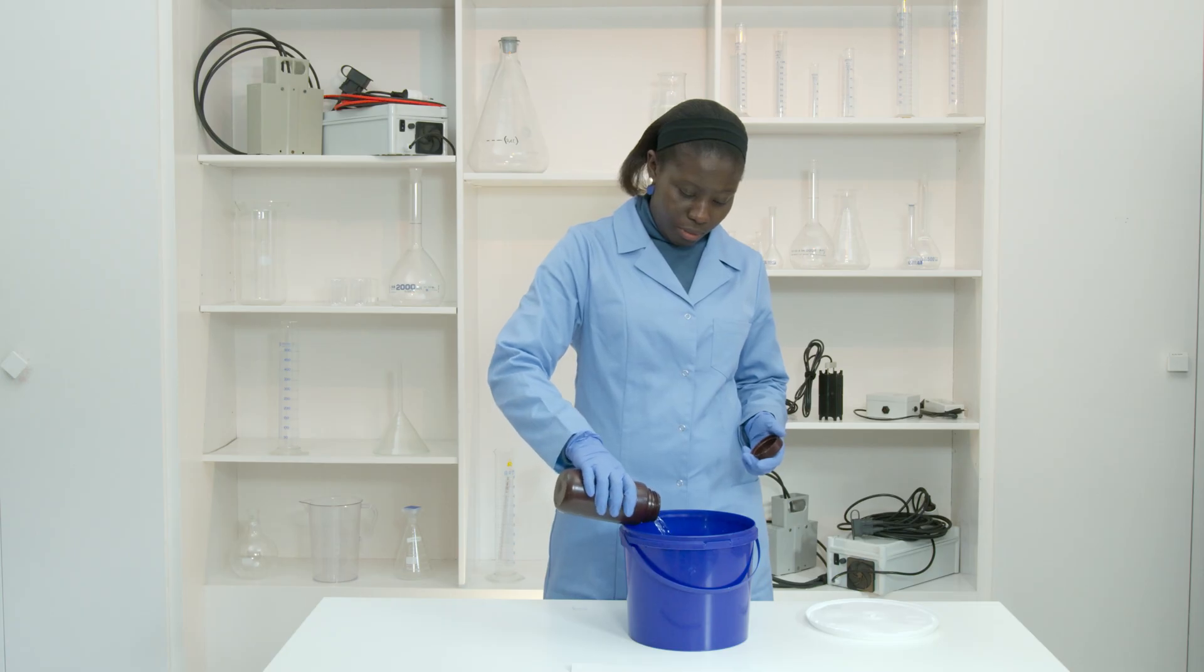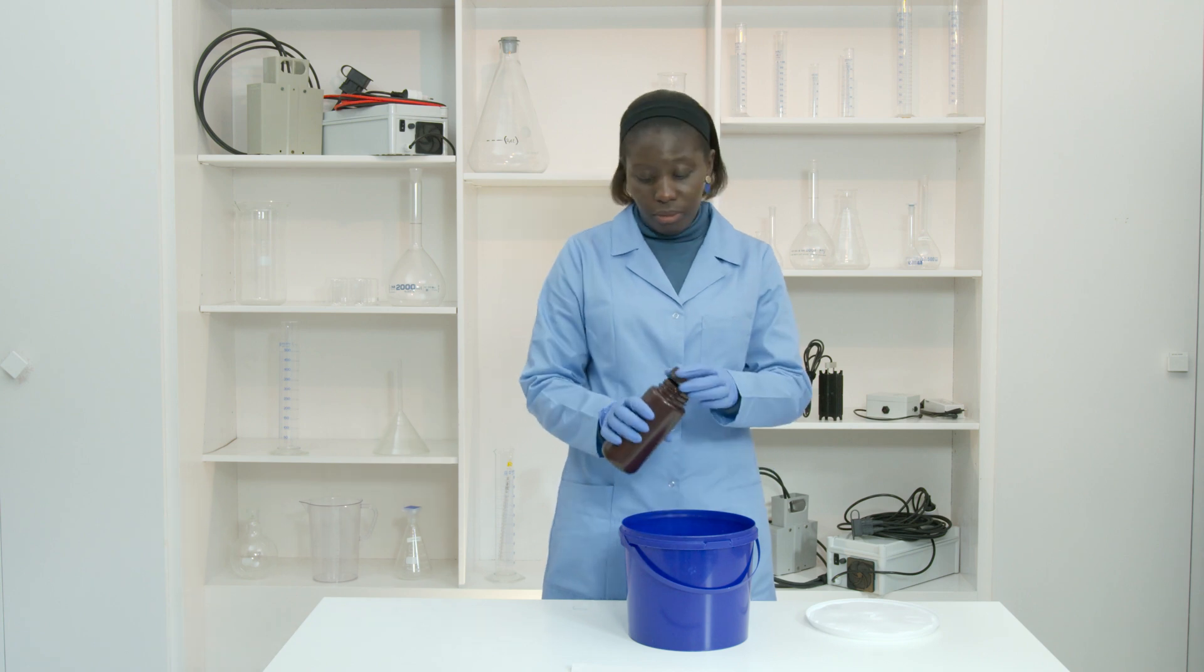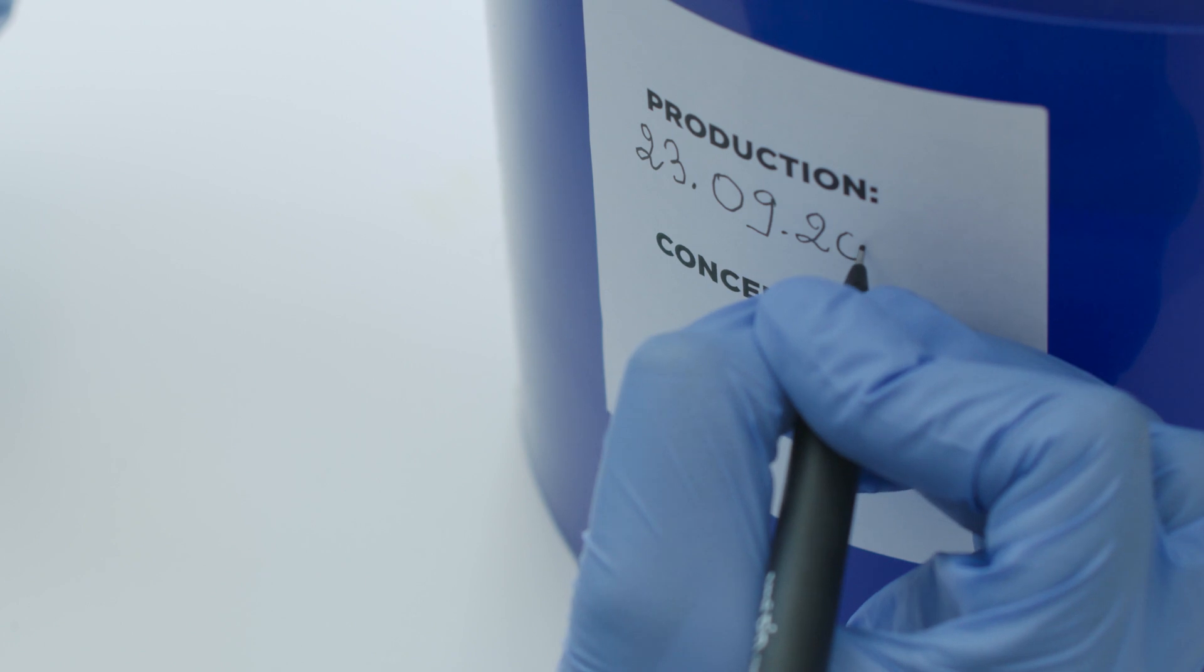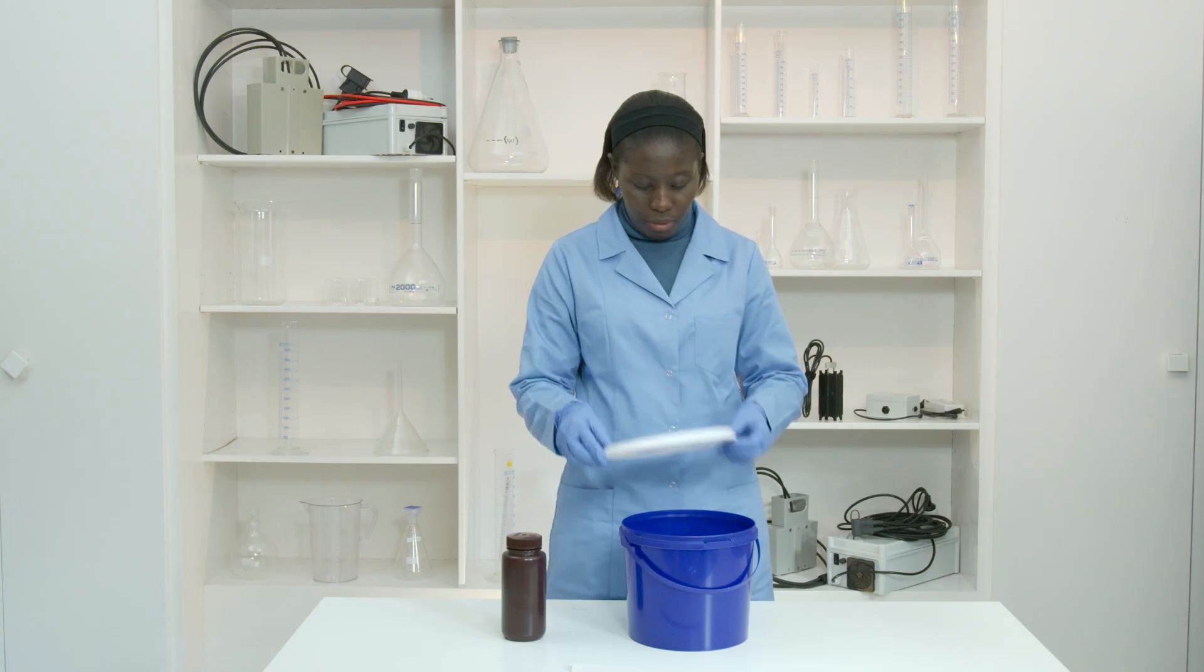Store the chlorine solution in an opaque, non-metallic, clean, tightly closed container and label it with a production date.